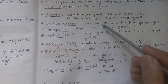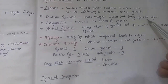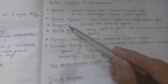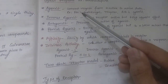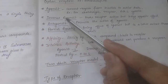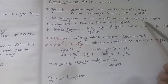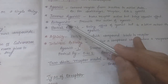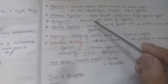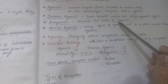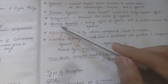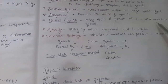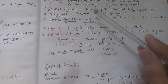The inverse agonist makes the receptor active but brings the opposite effect. The antagonist only binds to the receptor but does not stimulate it - it does not cause the normal effects and only prevents the action of the agonist. The partial agonist brings the effect of an agonist but to a lesser extent than a full agonist.